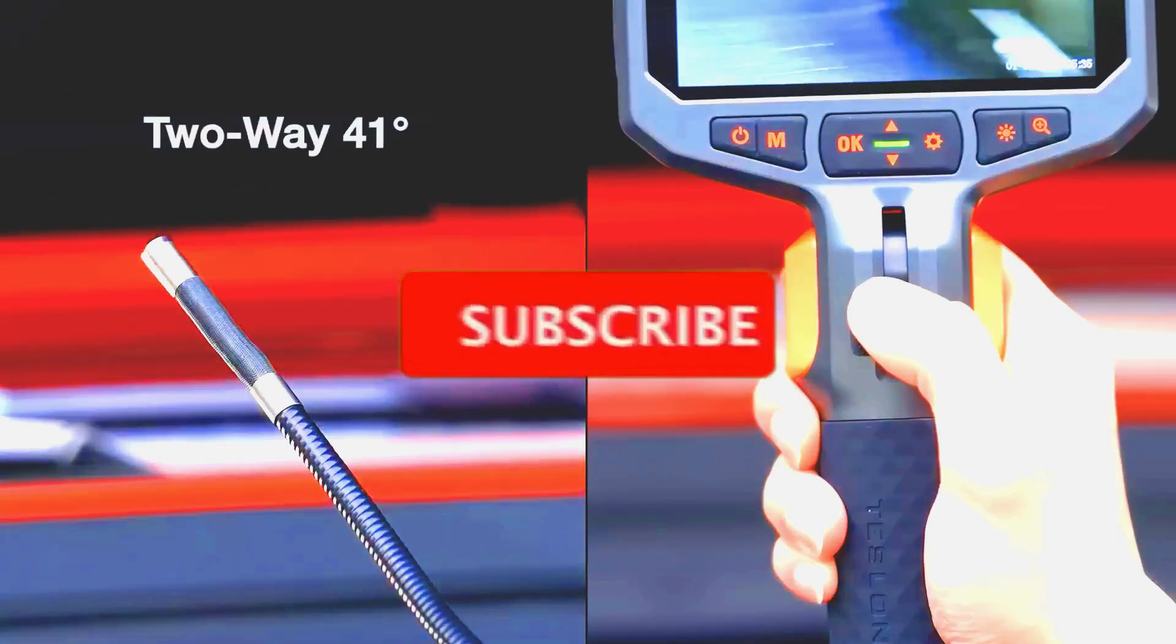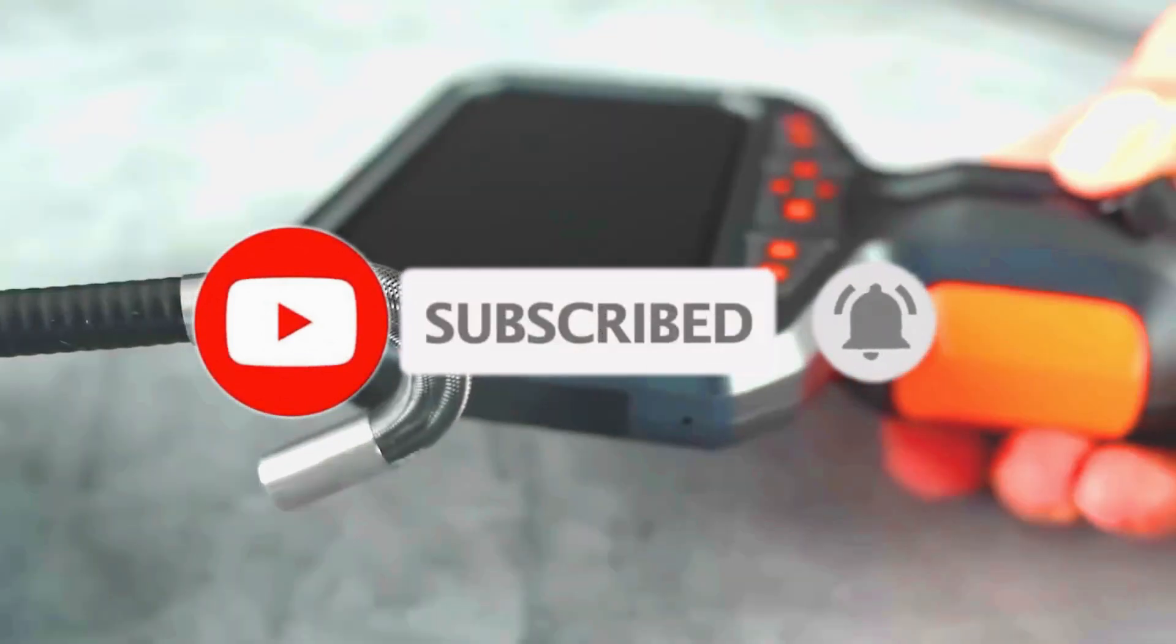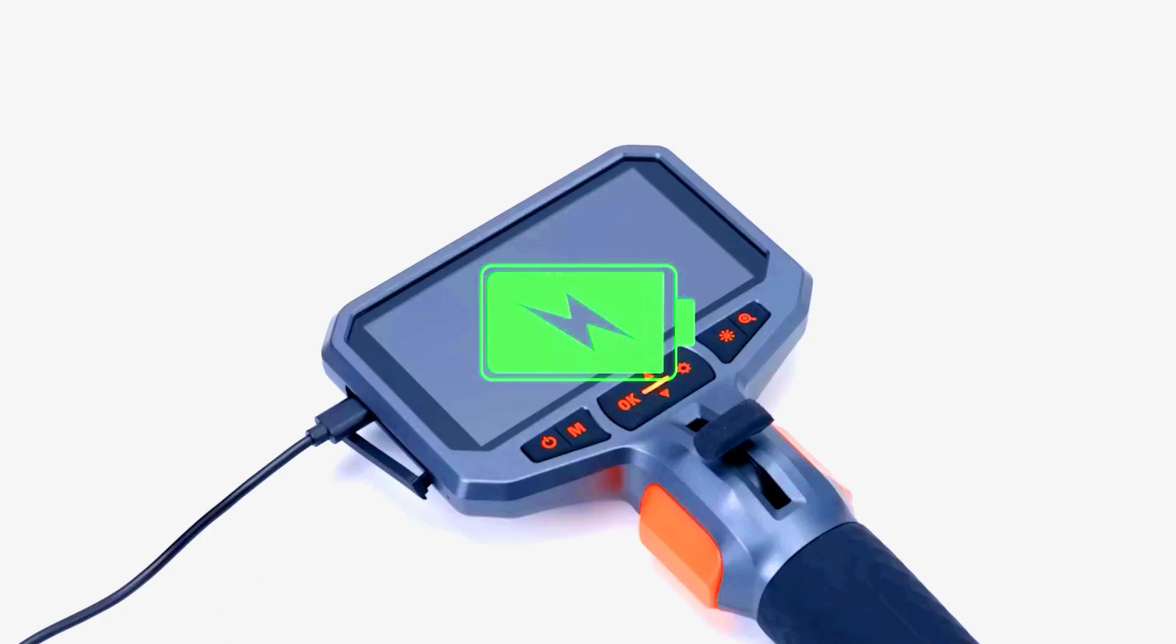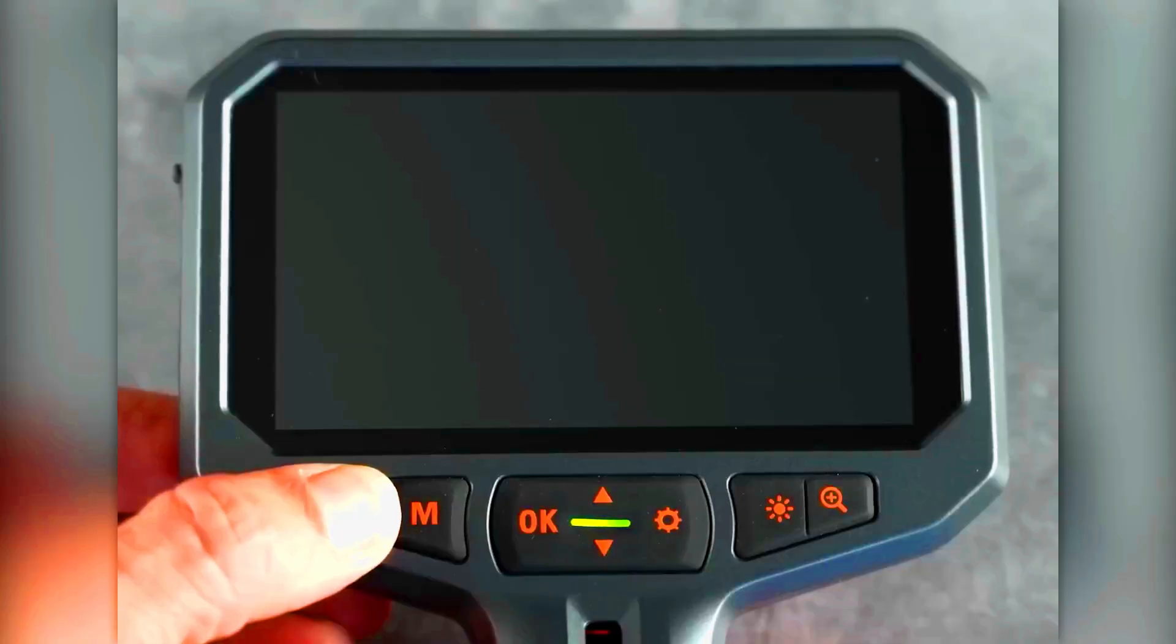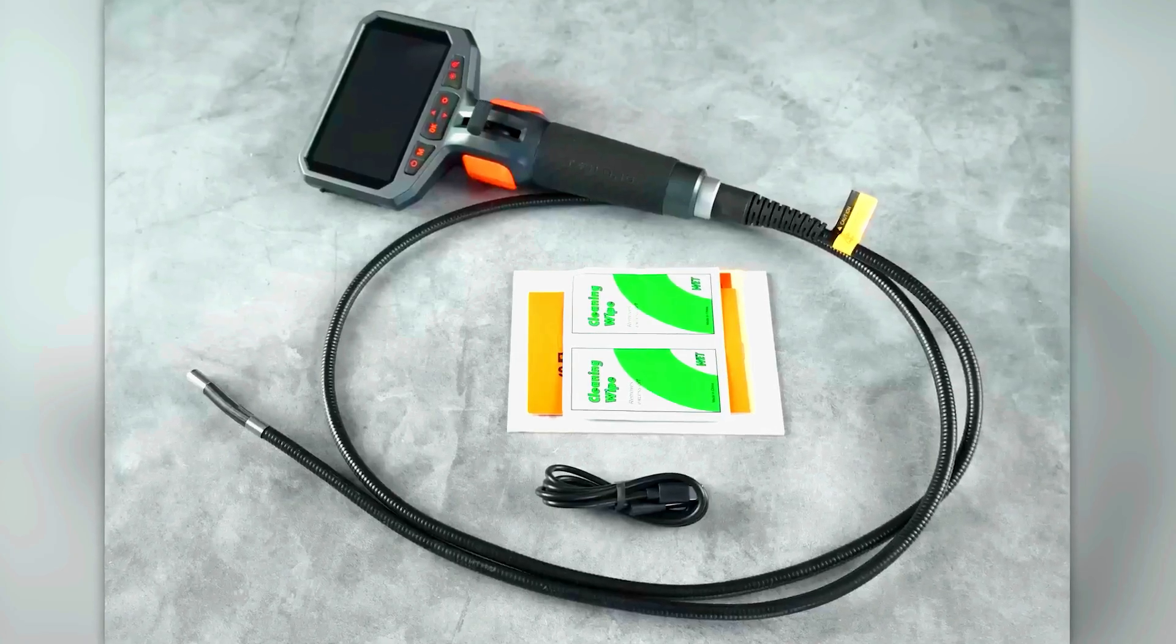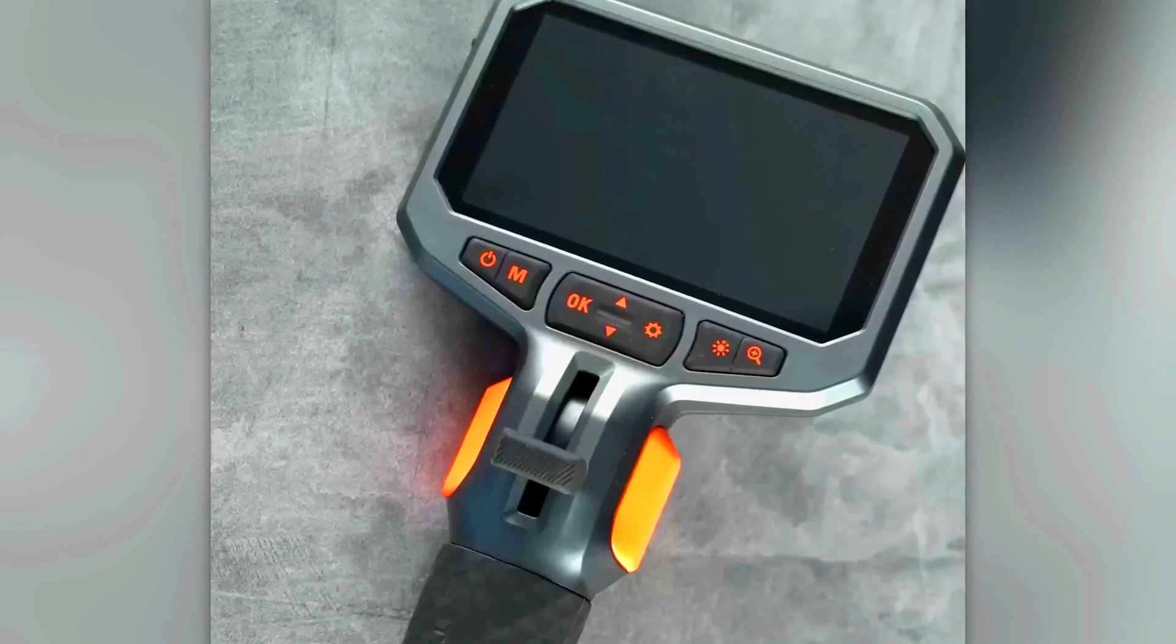The Teslong TD450S comes with built-in lighting from 8 LEDs. Additionally, the cable can bend up to an impressive 210 degrees. The included 32-gigabyte memory card can store up to 50 videos, each 5 minutes long, or 10,000 photos. Considering all these features, the price of the device is quite reasonable at $104.